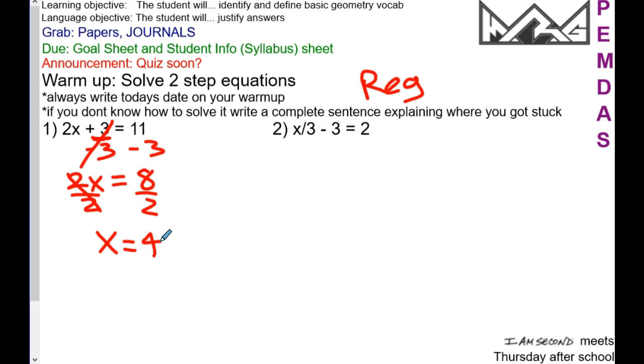So number two, we have a three and a three, but which is the loner? The minus three, right? So the opposite of minus three is plus three.